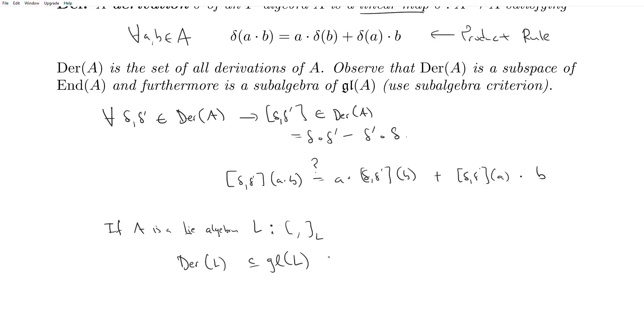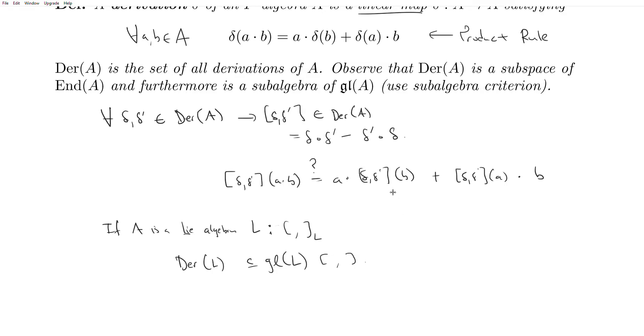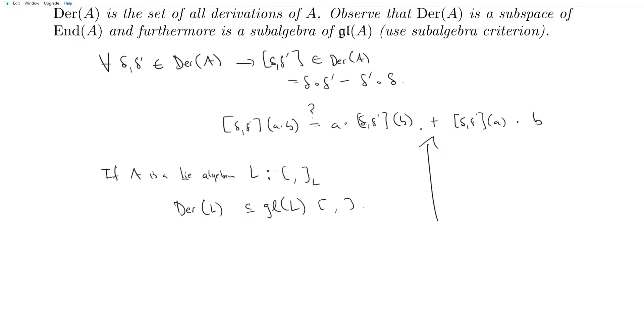And so above what this thing, it suffices to check that because this is more general. But just to be familiar with what the notation looks like in the Lie algebra sense, you'd be checking this: A bracket B in L. So this is the bracket in GL(L), and then this is the bracket in L itself, is equal to A bracket delta comma delta prime of B in L, plus delta comma delta prime of A bracket B in L. So there's two different brackets here, and I just want to make that distinction.